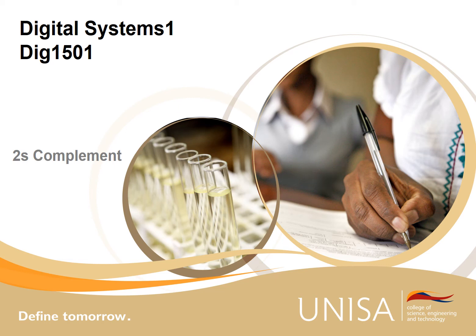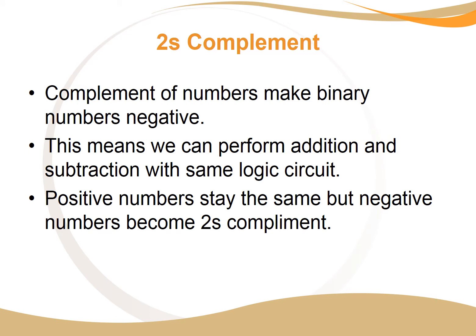Welcome to the video on ones and twos complement and using it to do subtraction. Taking the complement of a binary number makes it negative — it turns all the ones into zeros and all the zeros into ones. This means we can perform subtraction by addition: we add a negative number to a positive number. This allows us to use a single logic circuit for both addition and subtraction, making everything smaller, cheaper, and more power efficient.